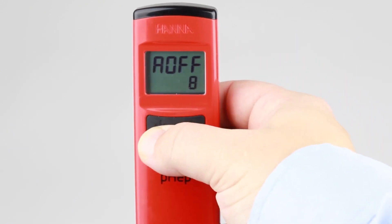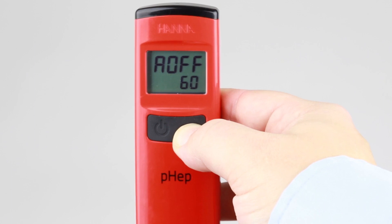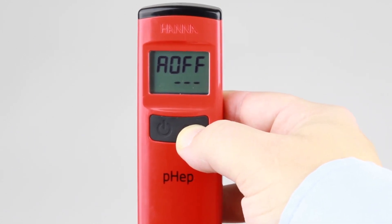Pressing the on-off button moves to the next setup option, which is for automatic shutoff. The default setting is for 8 minutes. Pressing the CAL button cycles through to 60 minutes, then disabled, and finally back to 8 minutes.